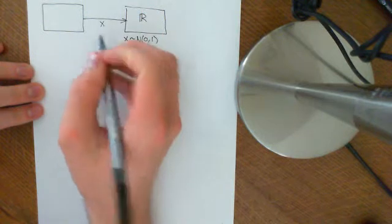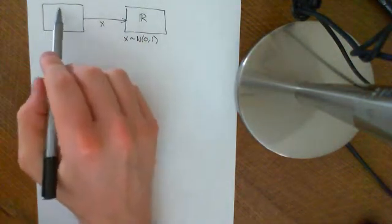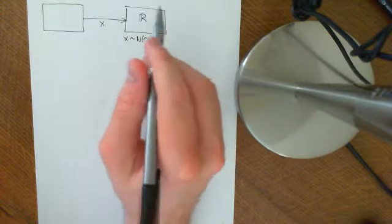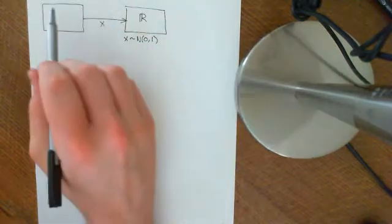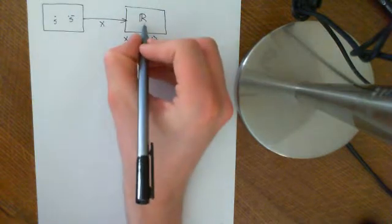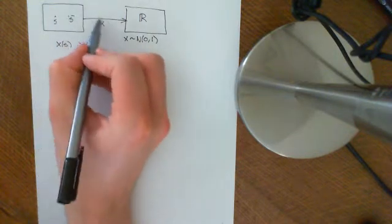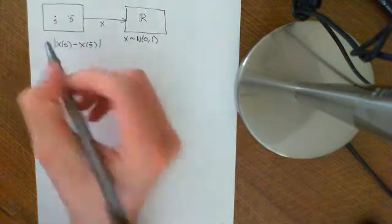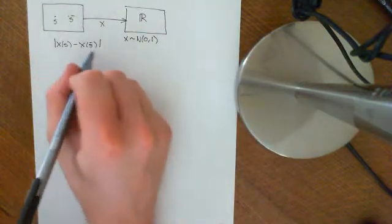So the setup for our problem is this: we want to pick an outcome from the probability space — just pick a random outcome — and then pick another random outcome. So you can get any two real numbers. Then what we're asking is: take the difference between those two values. You pick two outcomes, say s and s-bar, and both have real numbers corresponding to them. You get X of s and X of s-bar, which are real numbers, and then you take the difference between them and the absolute value of that to get a distance.